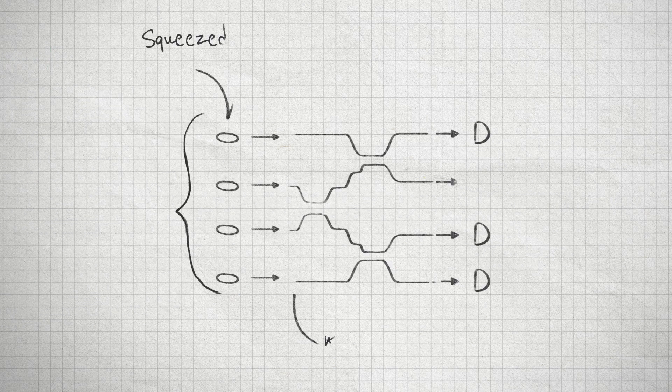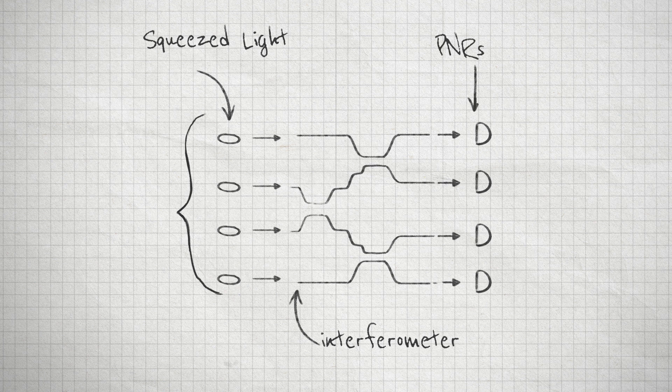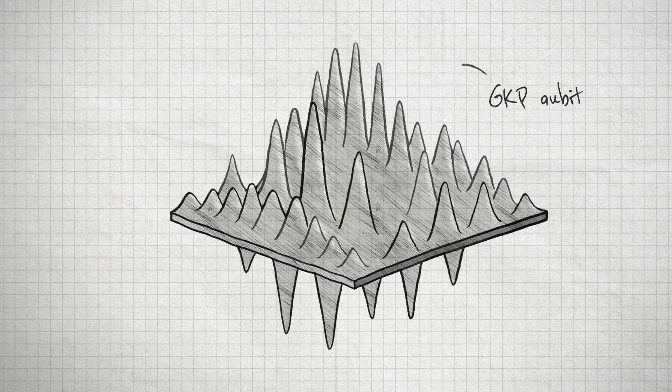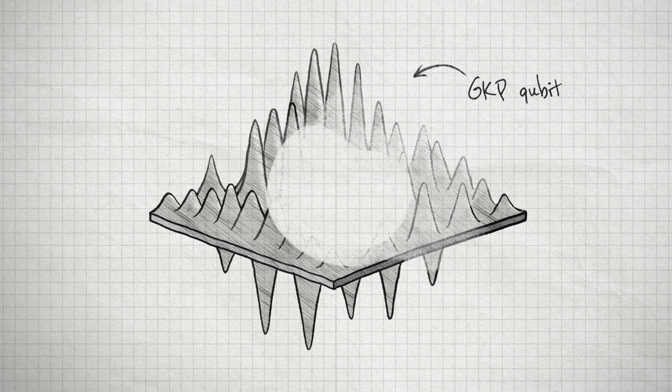At Xanadu, we build qubits using pulses of light. Each qubit in our quantum computer is a special quantum superposition of many photons, called a GKP qubit.